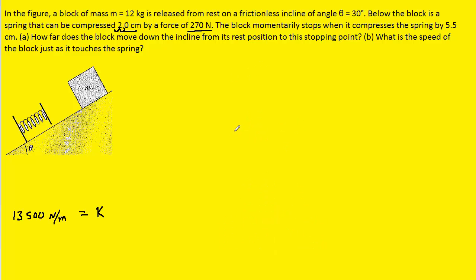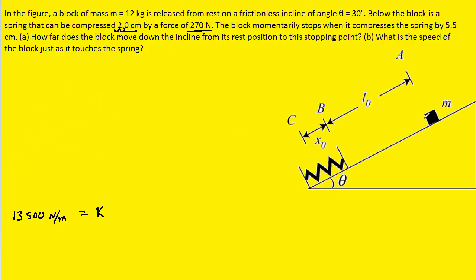Next, to get a better understanding of this problem, we're going to redraw the picture that was given. At the top of the ramp where the block starts, we have marked that point as A. It then slides down the ramp a distance that we have called L₀, where it will make contact with the spring at point B. But because of its momentum, it's going to continue down the ramp and compress the spring until it stops and reaches point C.